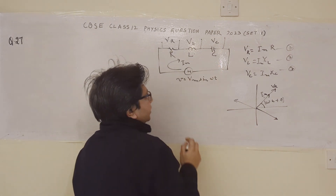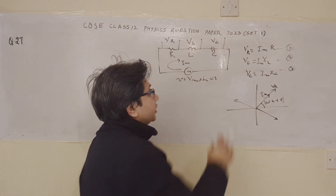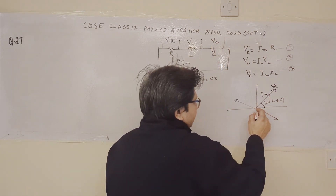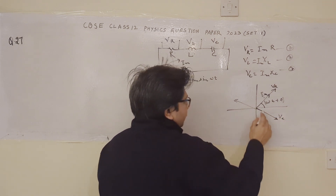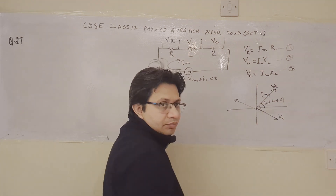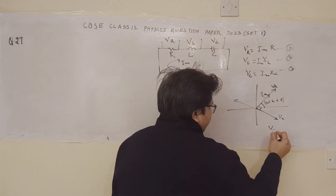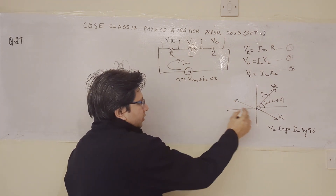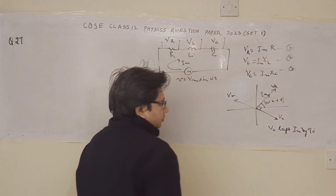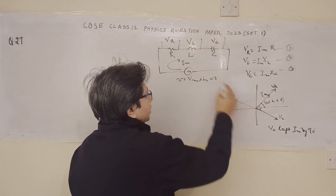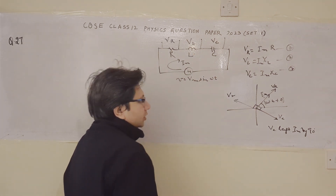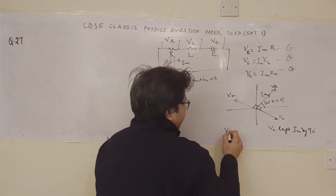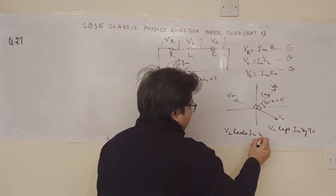We know that the current in the capacitor leads the voltage across the capacitor by 90 degrees. So we draw the phasor V_C which is 90 degrees behind in phase with respect to the series current Im — meaning V_C lags Im by 90 degrees. Similarly, the voltage across the inductor V_L leads the current Im by 90 degrees, so V_L is drawn 90 degrees ahead of Im.